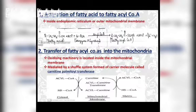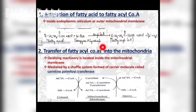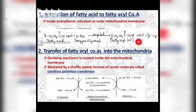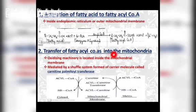Step one is the activation of the fatty acid to fatty acyl coenzyme A. It occurs inside the endoplasmic reticulum or the outer mitochondrial membrane. The fatty acid, in the presence of ATP and the enzyme acyl coenzyme A synthase, is converted into fatty acyl coenzyme A, adenosine monophosphate, and inorganic phosphate.